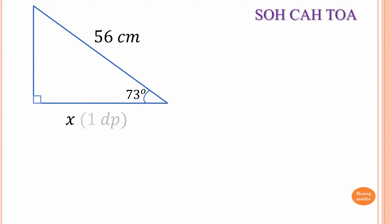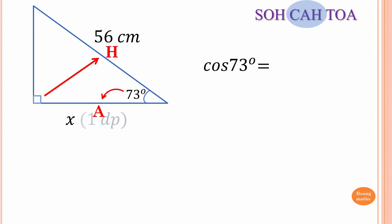Find the value of x in this right-angle triangle correct to one decimal place. First, we identify which trig ratio to use by labeling the sides. x is next to 73°, so it's adjacent — label A. The 56 centimeters is the longest side opposite the right angle, so it's the hypotenuse — label H. We have A and H, so we use CAH — cosine. cos(73°) = x/56.